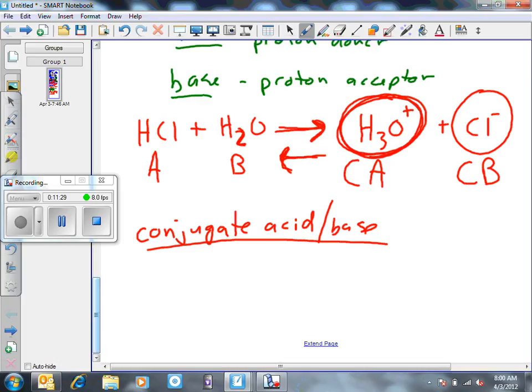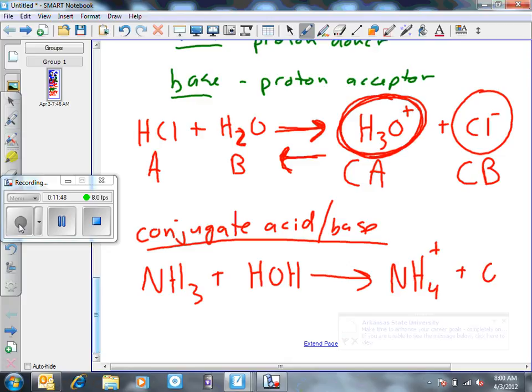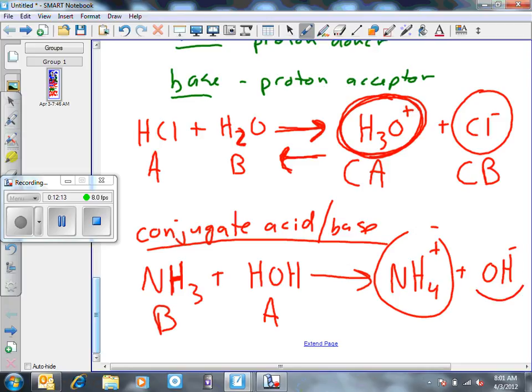So some more definitions there for you. Let's try another one here. Let's say we have NH3 plus HOH. Now, if you look at this one, we can see that this one here is accepting the hydrogen on this side. So we're going to call this the base. And then by definition of Bronsted-Lowry, this would be the acid. Because it's donating and it leaves it with the hydroxide ion.